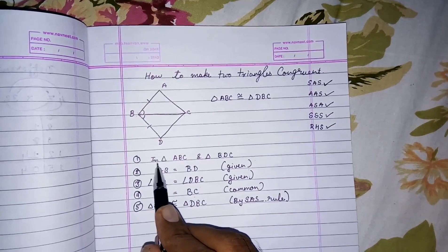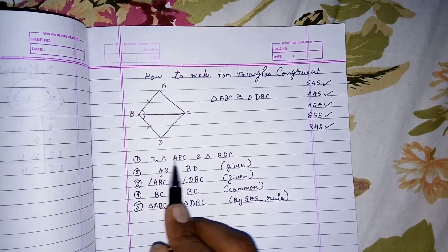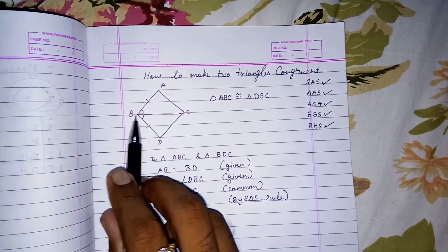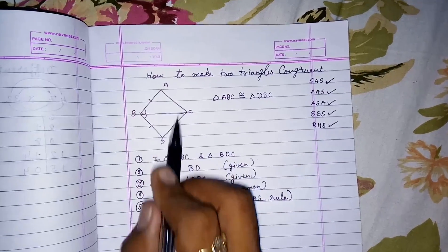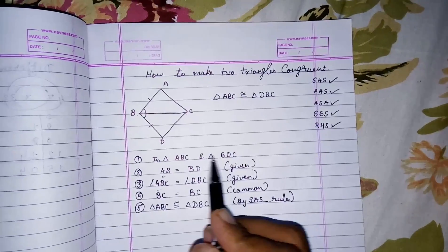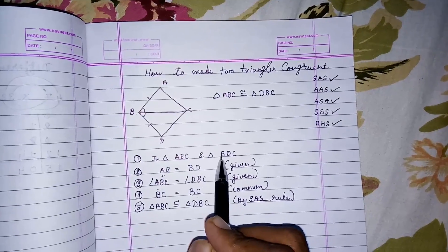First we have to write the names of the triangles: ABC in triangle ABC, then triangle BDC. I can give DBC also, CBD also, any name we can give because here we are only selecting the triangles.